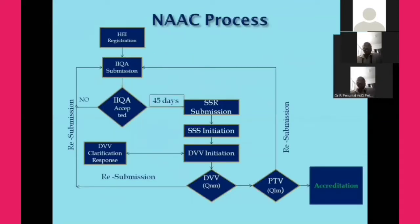This flowchart explains the overall process for NAAC accreditation. First, the higher education institution has to register in the NAAC portal, as the accreditation process is now online. We apply online by creating a login ID and user ID. After registration, we submit the IIQA — Institutional Information for Quality Assurance — online. The Council then scrutinizes the IIQA, and once it is accepted, we must submit the SSR self-study report within 45 days. After submission of the SSR, the Student Satisfaction Survey takes place, where the Council randomly selects roughly 500 to 600 students from the institution and sends them a set of questions via email.